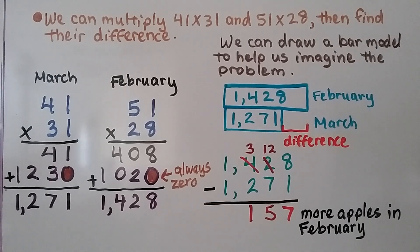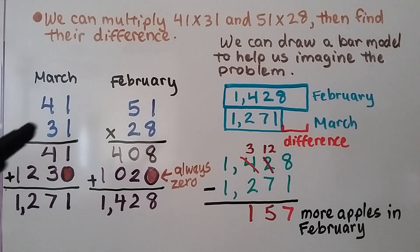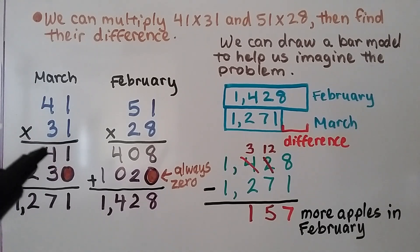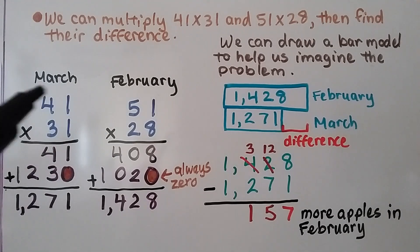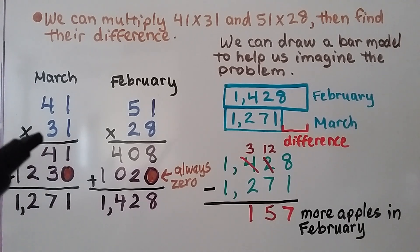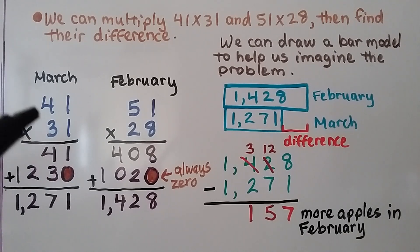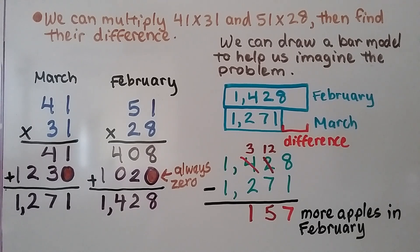We can multiply 41 times 31 and 51 times 28, then find their difference. For March, he sold 41 apples for 31 days, so we multiply 41 times 31. We do 1 times 1 is 1, and 1 times 4 tens is 4 tens — or think of it as 1 times 41, giving us 41. We know this second row always starts with a zero. We have 3 tens times 1, which is 3 tens, and 3 tens times 4 tens, which is 12 tens. We add our partial products and get 1,271 apples for March.